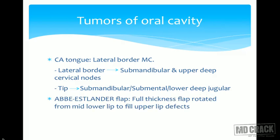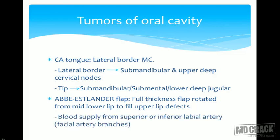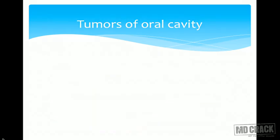The Abbe-Estlander flap is a full-thickness flap which is rotated from the mid-lower lip to fill upper lip defects. The blood supply of this flap is from the superior and inferior labial arteries, which are branches of the facial artery.